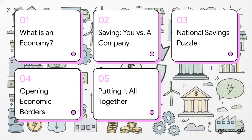So here's our game plan. We're going to start with the absolute basics — the core equation of an economy. Then we'll look at savings from two different angles: you and me versus a big company. After that, we'll see how those pieces fit into the bigger national puzzle, open up the borders to see how world trade changes things, and finally put it all together.